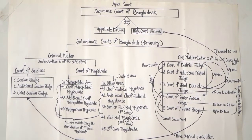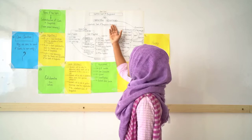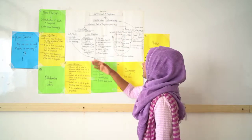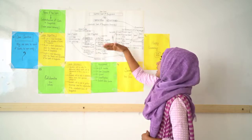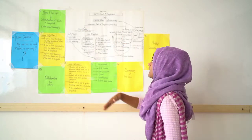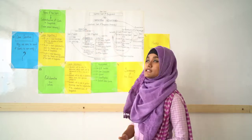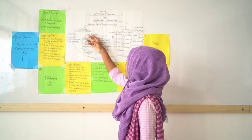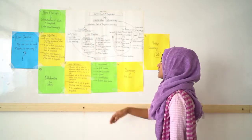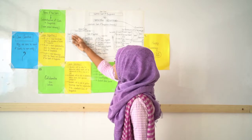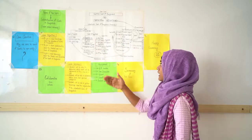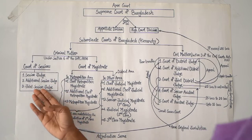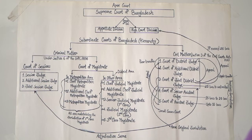Looking at the subordinate courts of Bangladesh under the general hierarchy, in the case of criminal matters, under section 6 of the CrPC — that is the Code of Criminal Procedure 1898 — the courts all over Bangladesh are structured under the Court of Session and the Court of Magistrate. The Court of Session is presided over by the Session Judge and the Joint Session Judge.